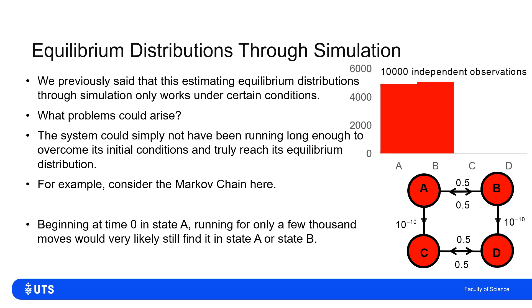But when I run this for a few thousand moves, what I saw was I saw about 50% A, about 50% B. So if I didn't acknowledge that my simulation hadn't reached equilibrium, I would wrongly say that the equilibrium distribution was 50% A, 50% B. When in fact, it should be zero chance of A, zero chance of B, 50% C, 50% D. The issue here was that it would take billions upon billions of moves to reach the equilibrium. And I just didn't wait long enough.